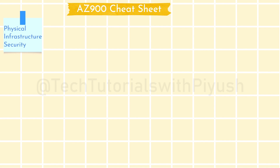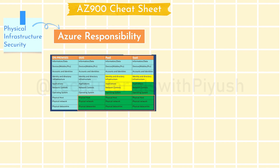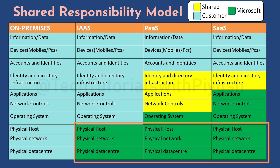Let's start with physical infrastructure security. Whether it is physical host, physical network, or physical servers, it's always Azure's responsibility to take care of those, and the cloud user wouldn't have to worry about it. If you look at the comparison diagram, it clearly shows what comes under Azure's responsibility, what comes under the customer's responsibility, and what falls under the shared responsibility model. The last three lines — physical host, physical network, physical data center — are always Microsoft's responsibility.